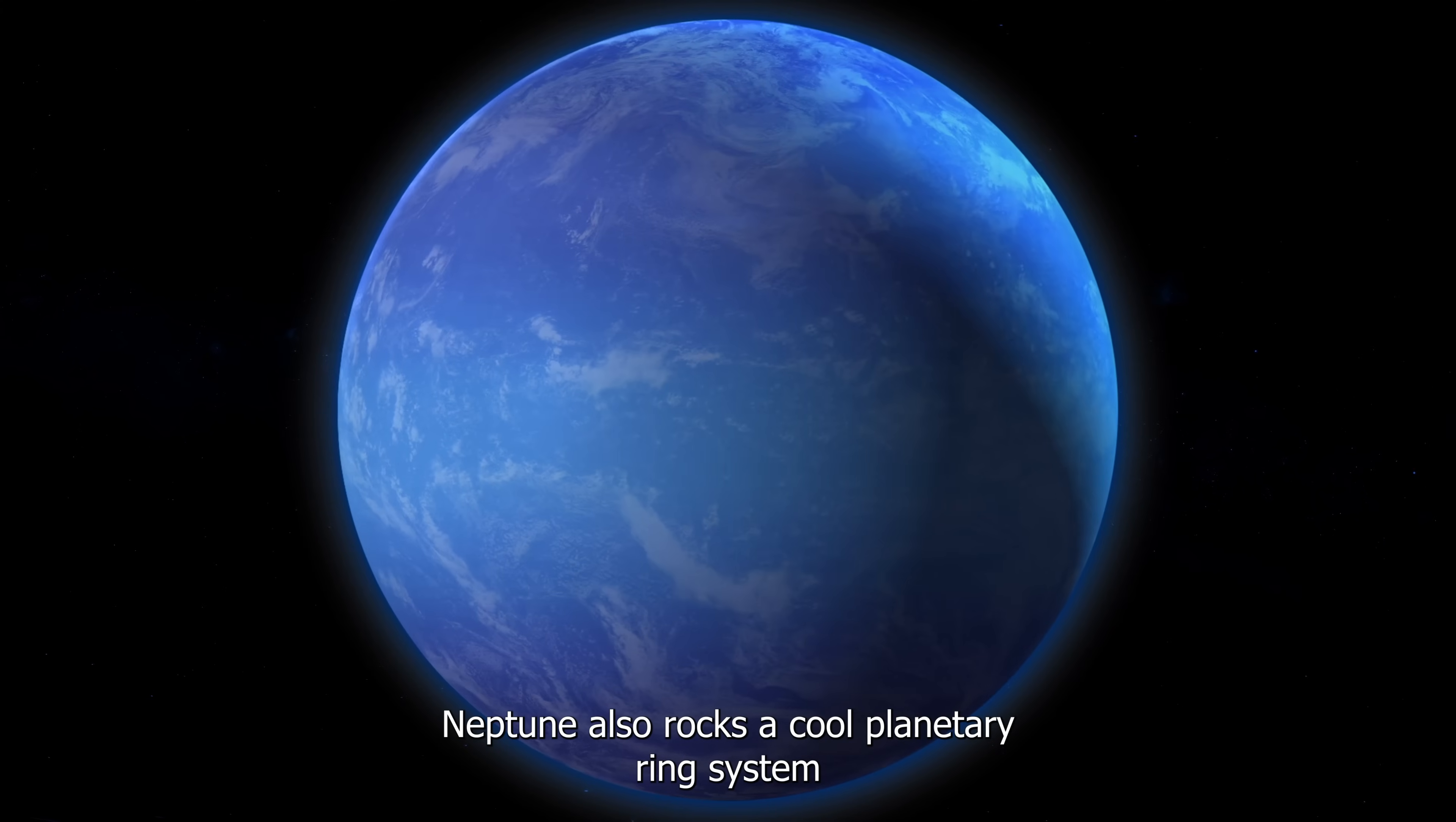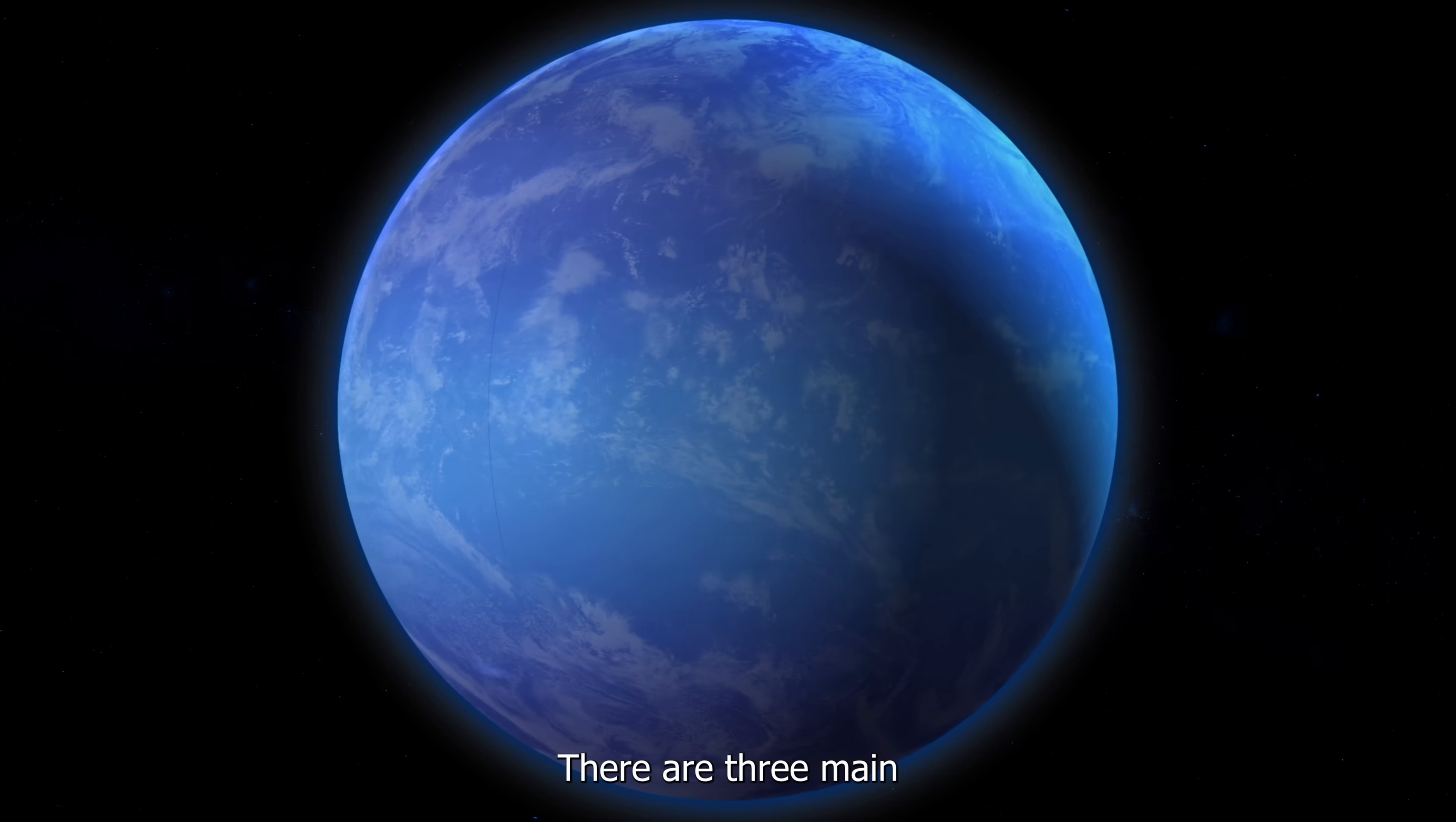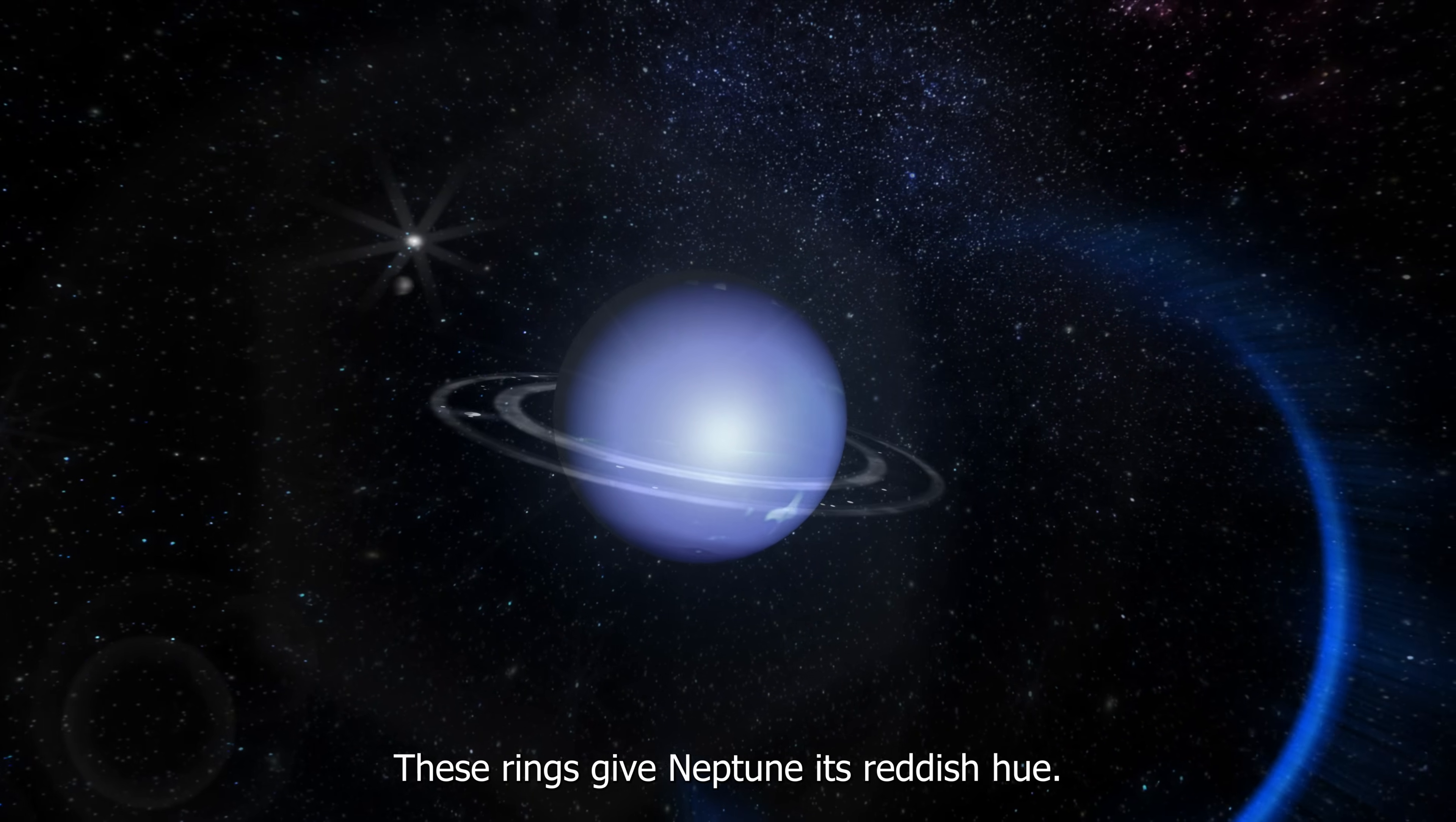Neptune also rocks a cool planetary ring system made of ice particles coated with different materials. There are three main rings, and they're named after astronomers who studied Neptune. These rings give Neptune its reddish hue.